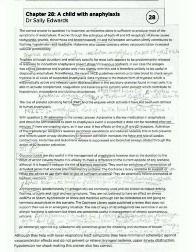Nonetheless, the recent NICE guidelines remind us to take blood to check serum tryptase, which is enzymatically active and released upon degranulation in the secretory granules found in mast cells. It is able to activate complement, coagulation, and kallikrein kinase systems, which contribute to hypotension, angioedema, and clotting disturbances. The role of platelet activating factor (PAF) and the enzymes which activate it have not been well defined in human anaphylaxis.